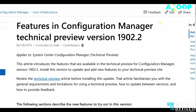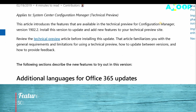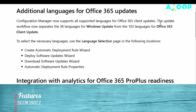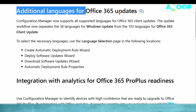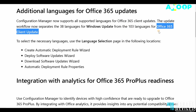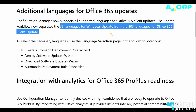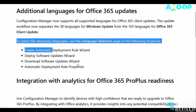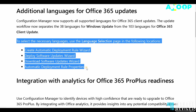I just wanted to give you a walkthrough of 1902.2 features. There are three major updates. Additional language support is available for Office 365 updates — this is for Office 365 client updates. The number of language details are also updated, and where you can select the languages is also updated in the documentation.